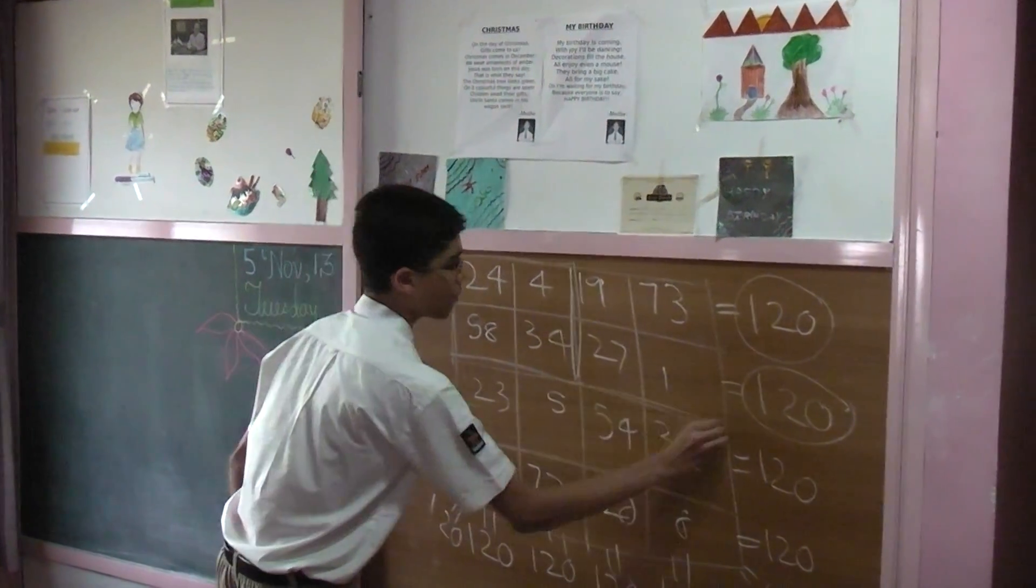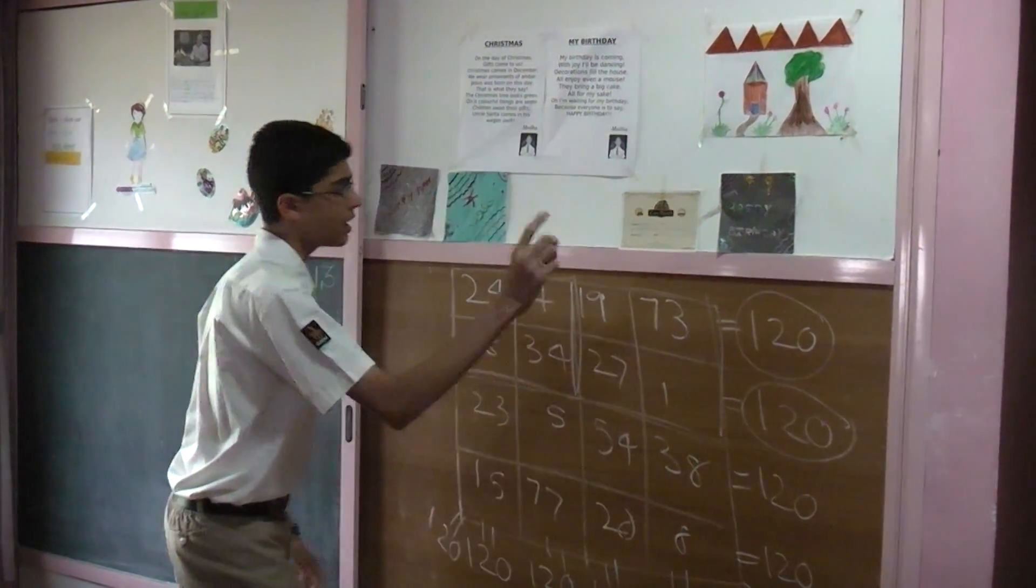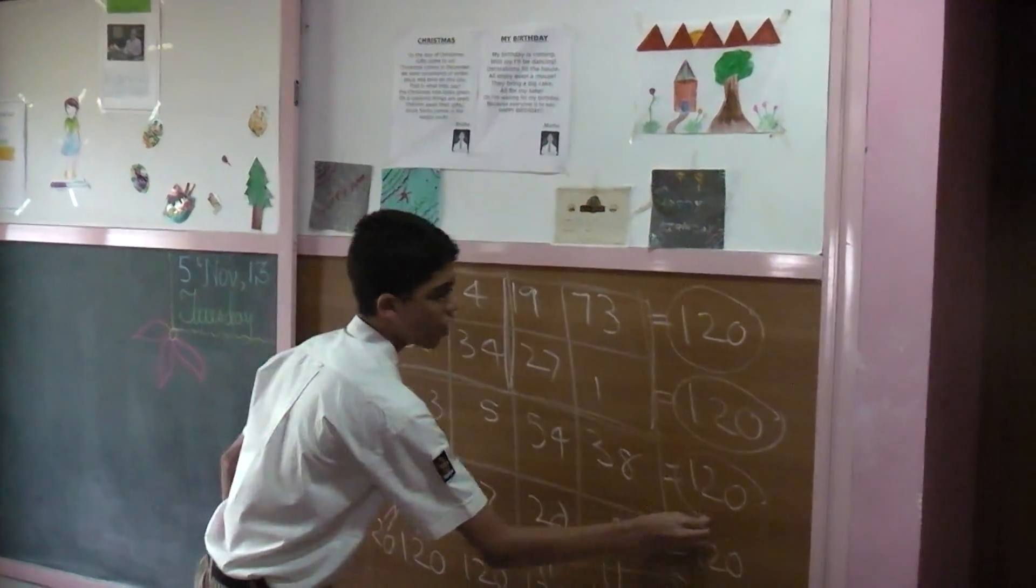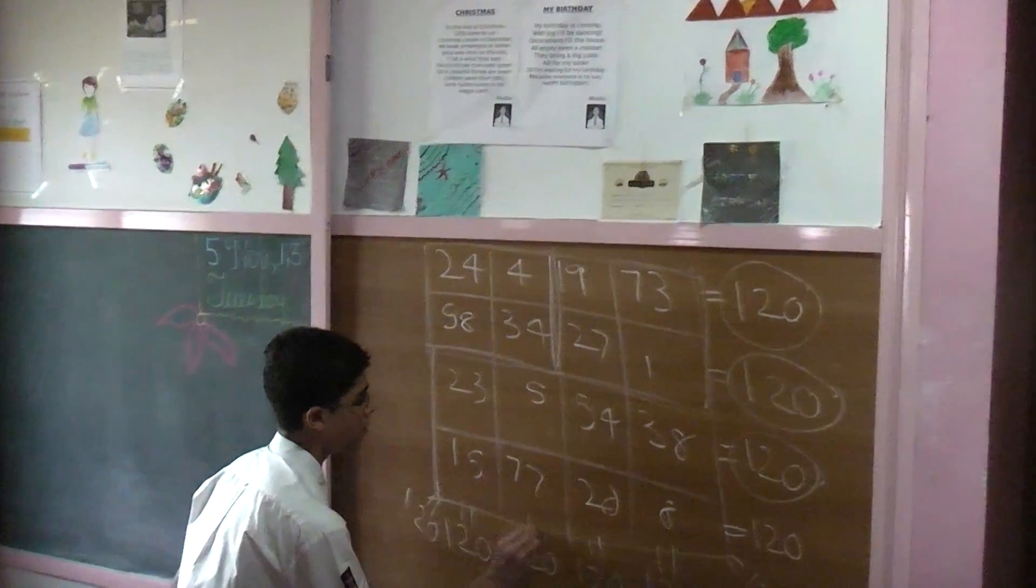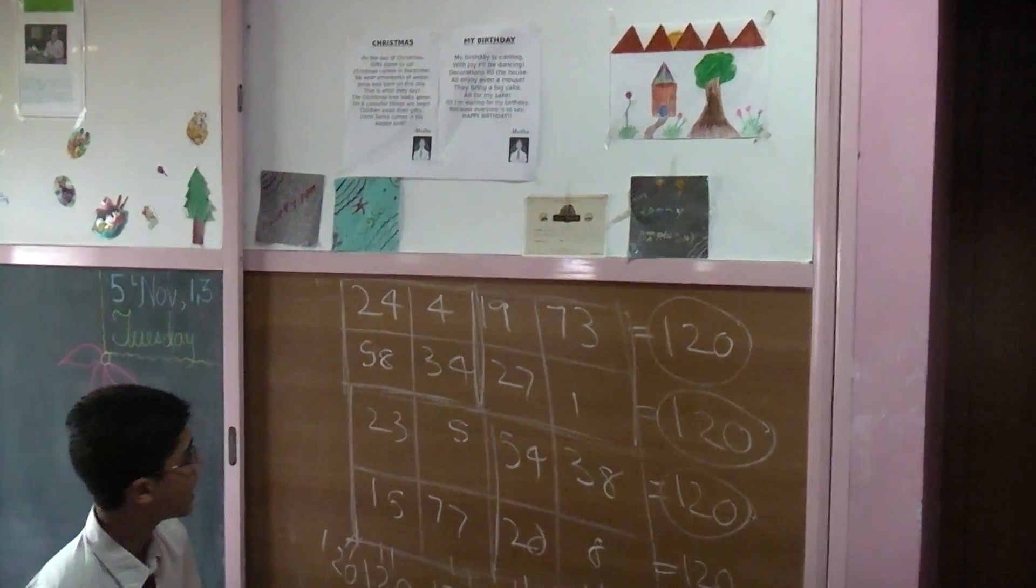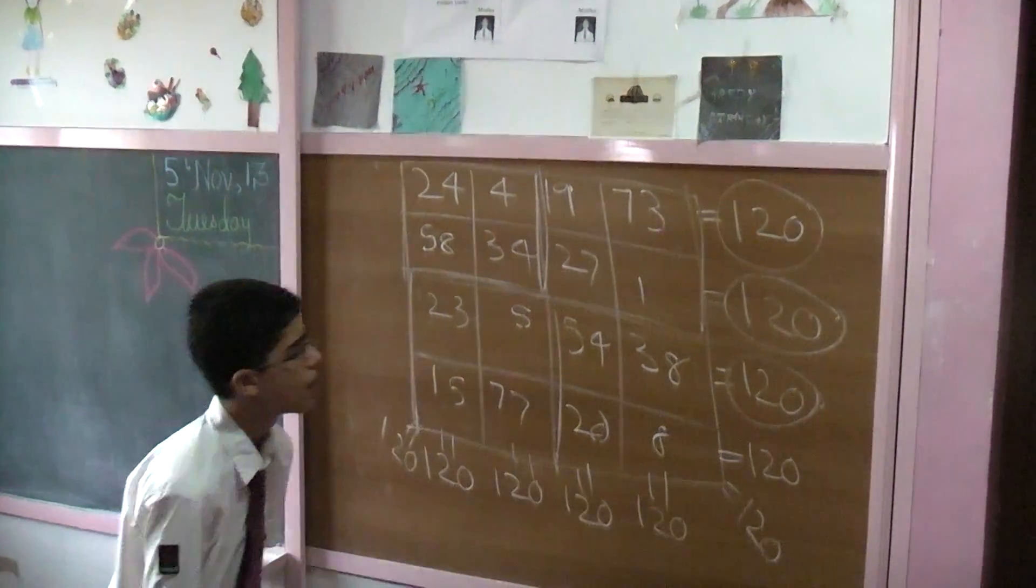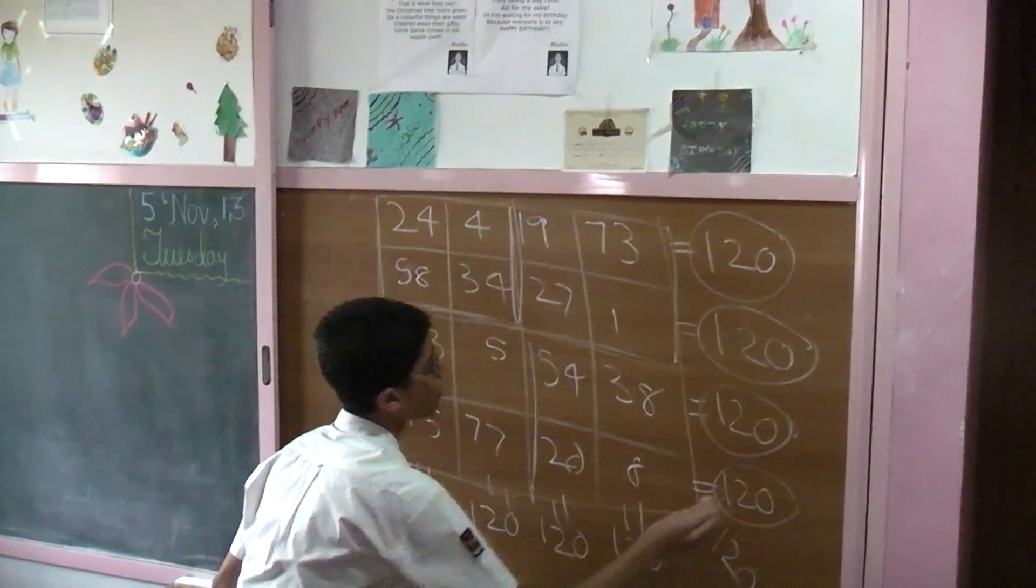You add these four numbers. You get 19 plus 73 is 92, 92 plus 1 is 93, plus 27 is also 120. Did I stop there? No. You add these four numbers. You get 23 plus 5 is 28, 28 plus 77 is 105, plus 15 is also 120.